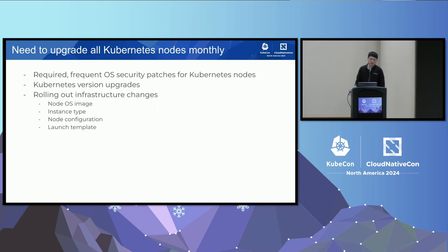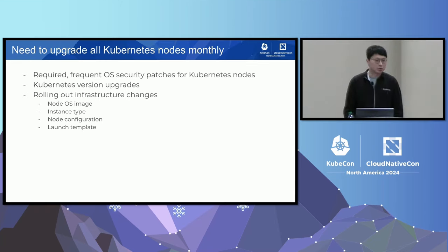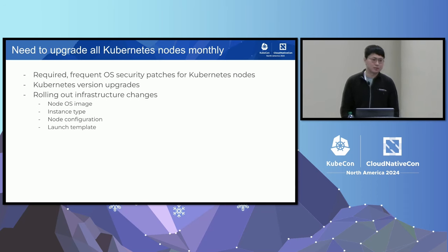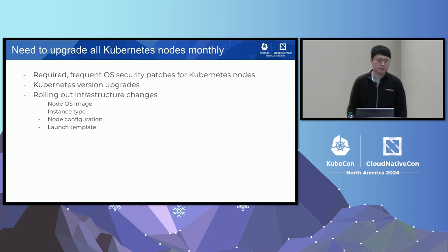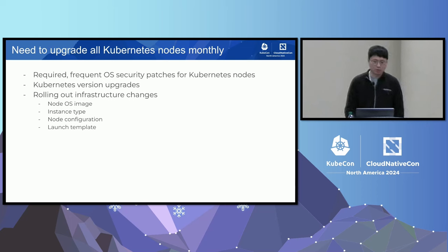Very early on, we realized that we needed to upgrade all Kubernetes nodes frequently — in this case, monthly. We had required frequent OS security patches for Kubernetes nodes for compliance reasons. We had Kubernetes version upgrades to get new features, bug fixes, and security patches. And we needed a way to roll out infrastructure changes, such as the node OS image, instance type updates, node configurations, and launch template updates.